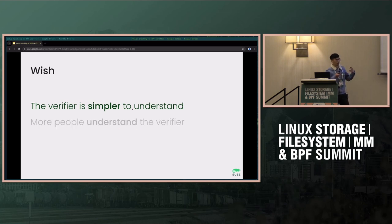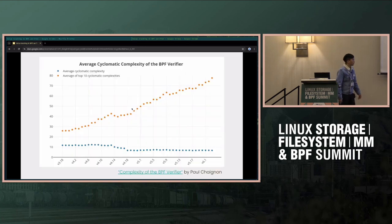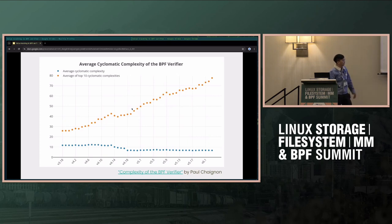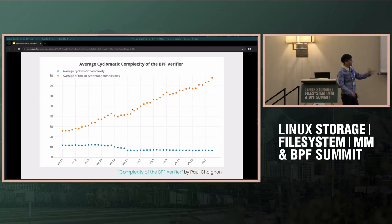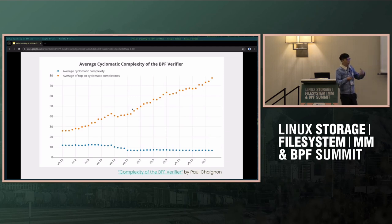Here I'll try to address the first wish — the simplification part. If you look at the complexity of the BPF verifier, it's steadily increasing. This graph is by Paul from Isovalent. Basically, we have more features in BPF, so it's just bound to happen that the BPF verifier gets more complicated.